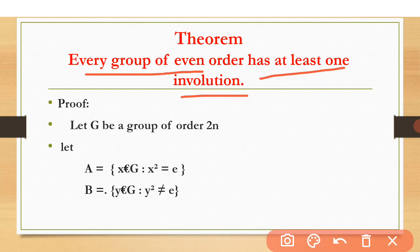Consider any group containing four elements. One of them is the identity element. Of the remaining three, two elements may be inverses of each other, leaving one element that must be self-inverse — that is, of order 2 — and therefore an involution.